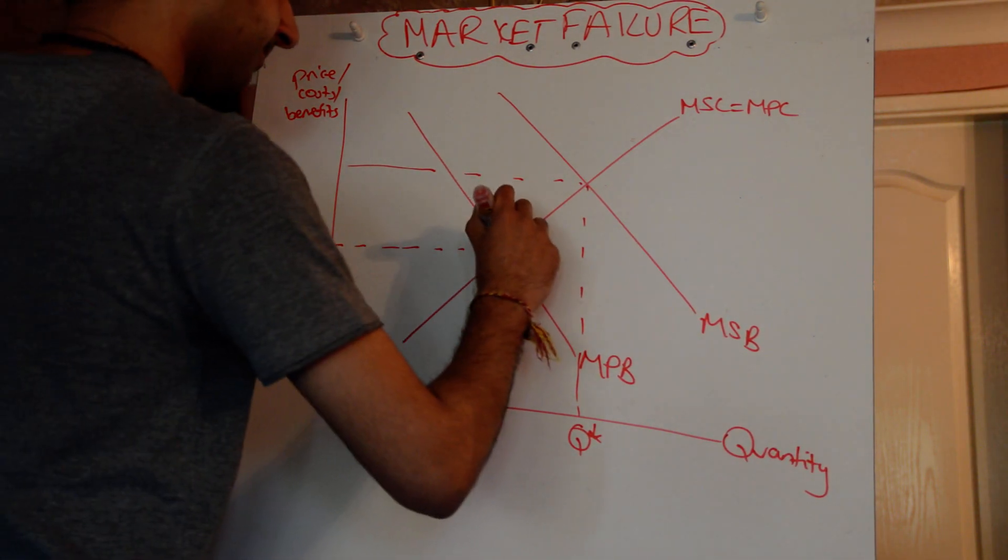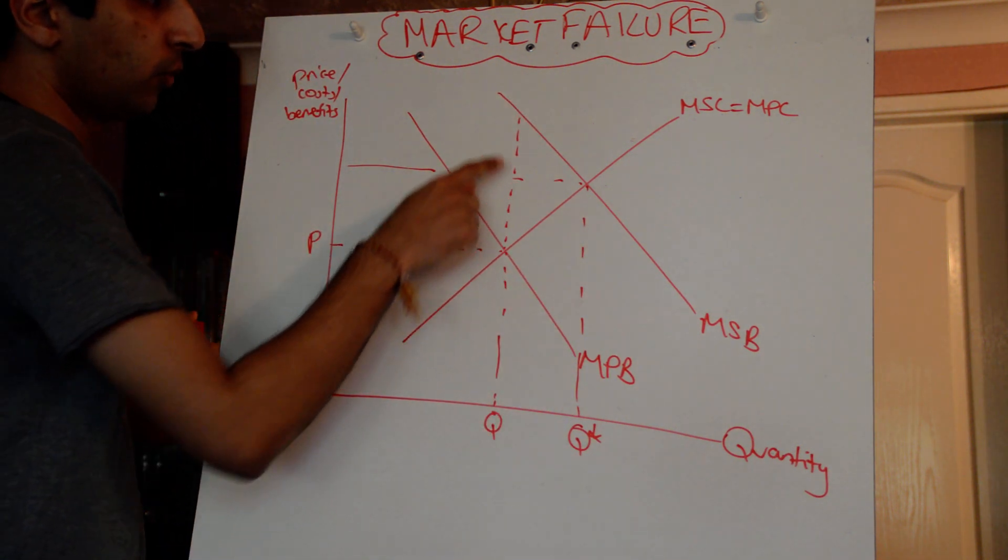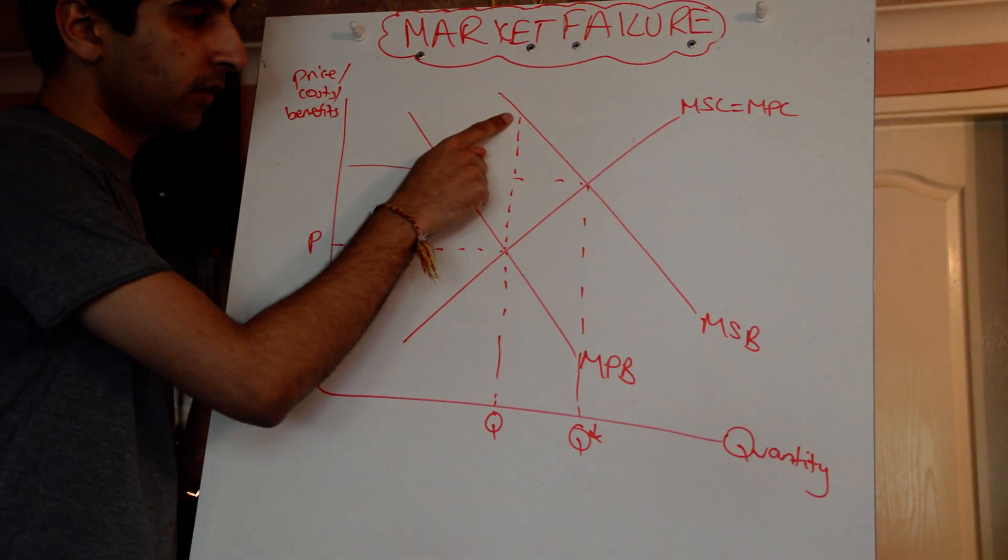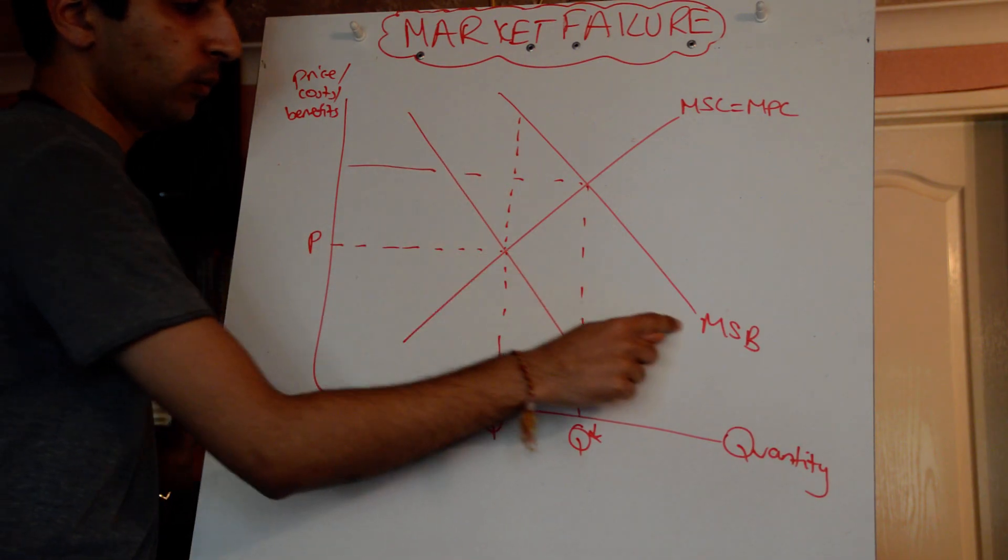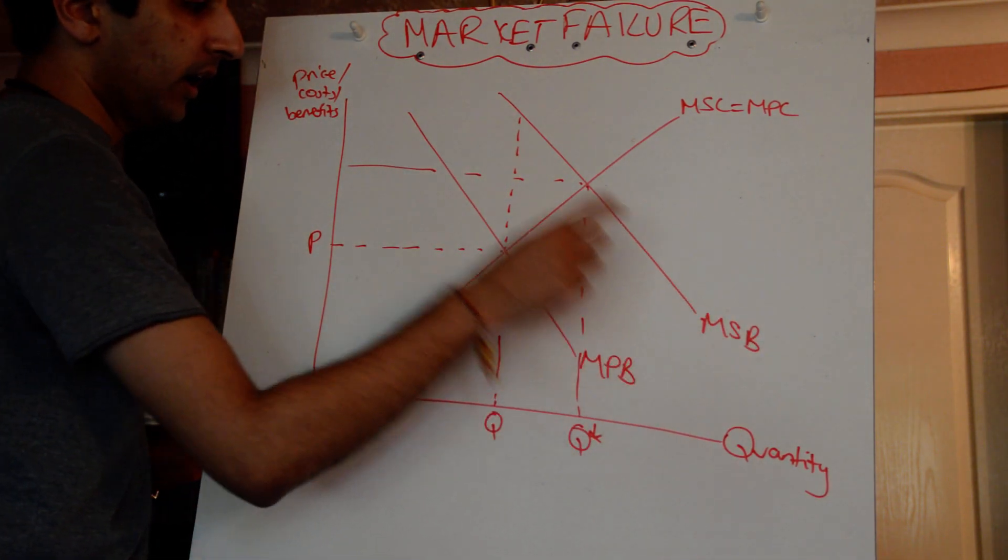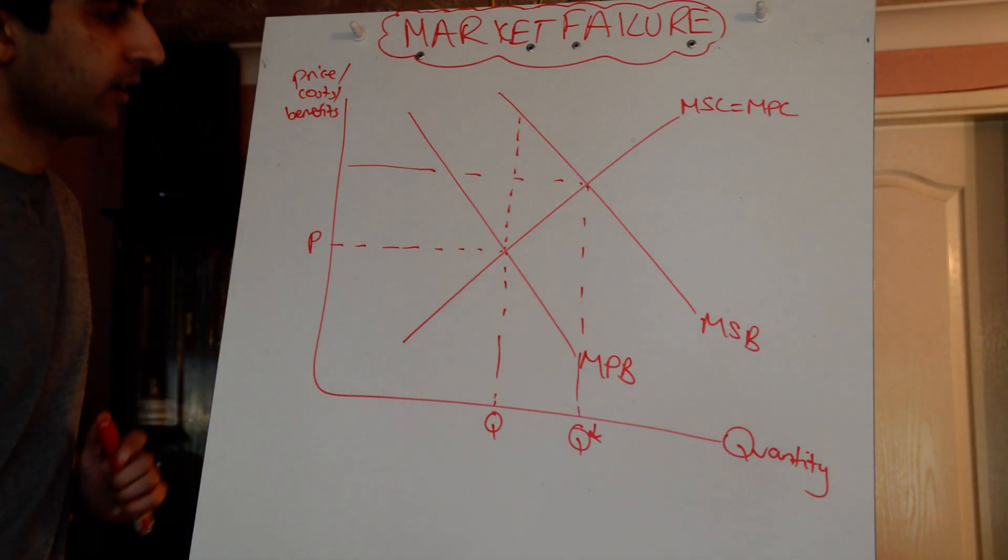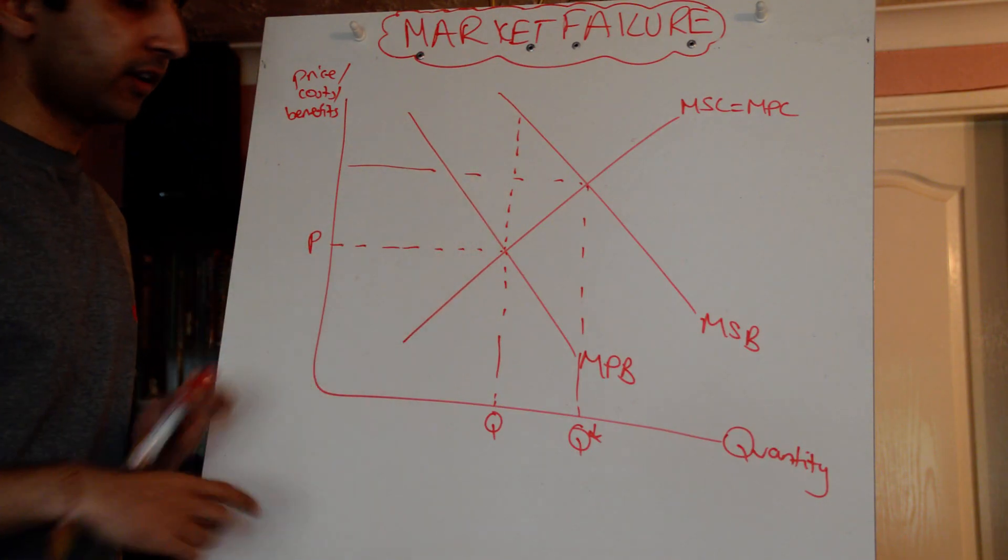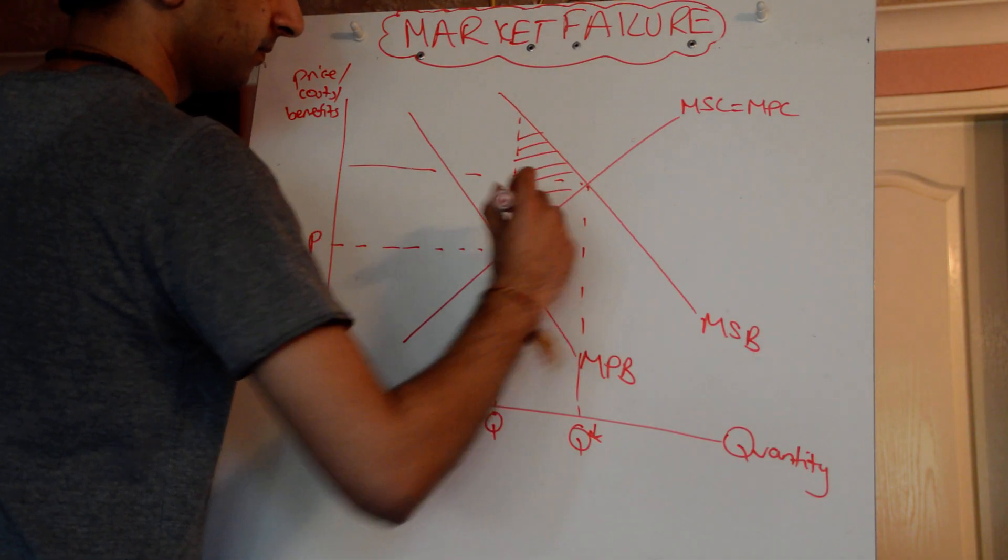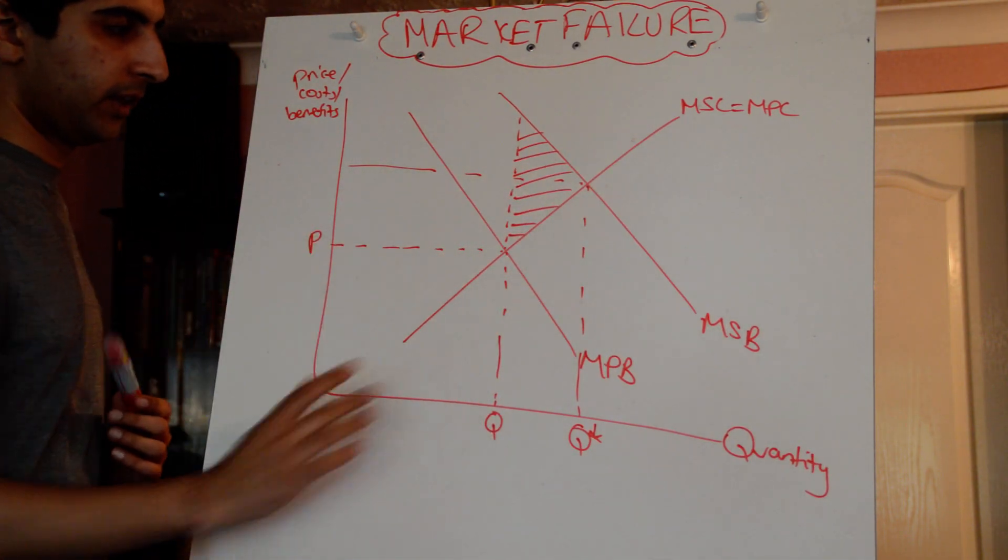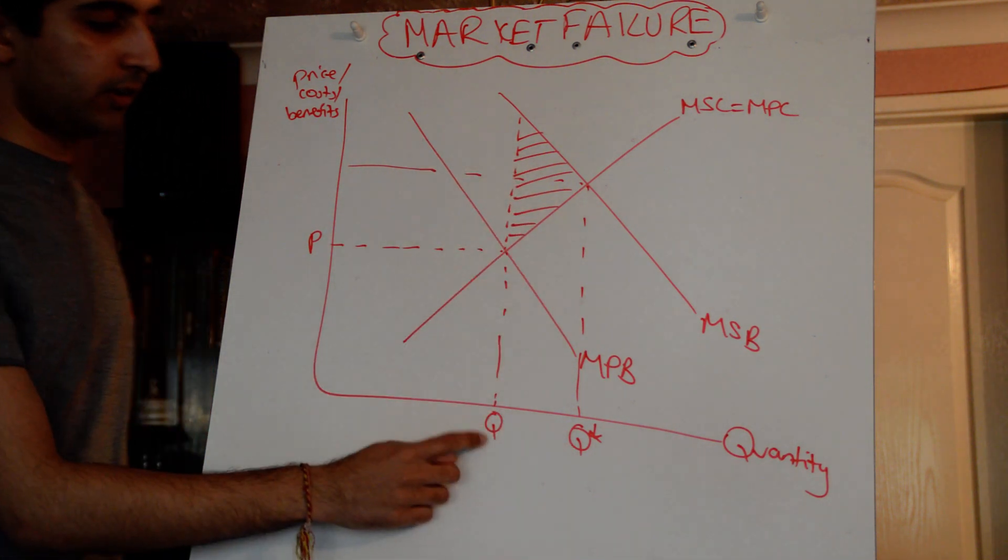There's a welfare loss involved here. The way we show that, we move up from the point that the market's at to where the benefits would be, given the marginal social benefit. So that's where the benefits would be if we were producing where the marginal social benefit is, given the level of cost at that point. That's where we would prefer to produce. As a result, because we're producing less, we lose that whole triangle.